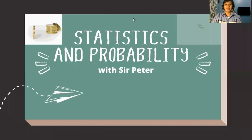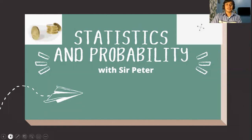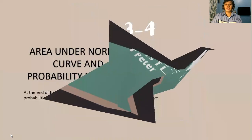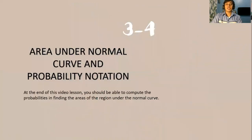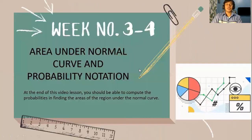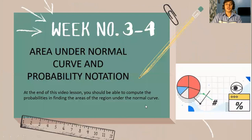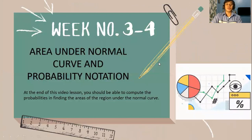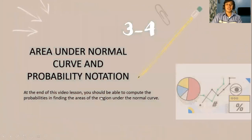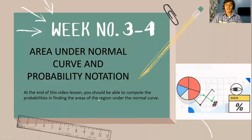A pleasant peace to learners. This is Sir Peter, your statistics and probability teacher. This is now the third video lesson for weeks three to four, and this time we will talk about the area under the normal curve and its probability notation.